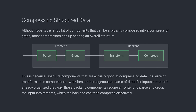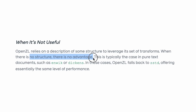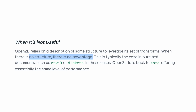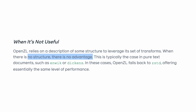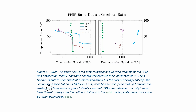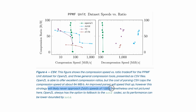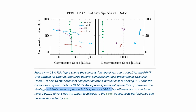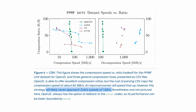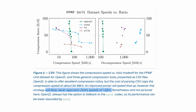The reason it's so fast is that the transforms expose structure before entropy coding, so the back-end compressor works more efficiently. But this is not a magic bullet. If the data is unstructured — like plain text — OpenZL can't infer structure and falls back to ZSTD internally. Also, parsing formats like CSV introduces overhead, which can slow down compression even if ratios improve.